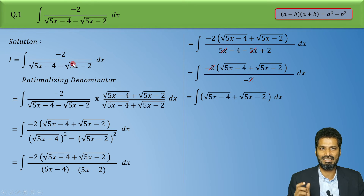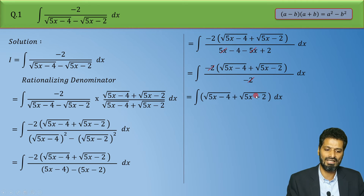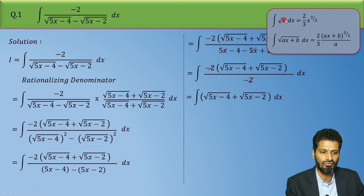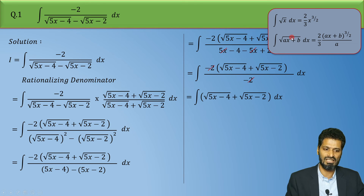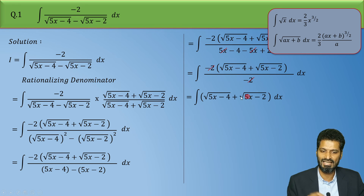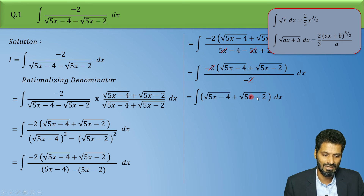So we have converted a somewhat complicated integral into a much simplified form. Now we simply need to integrate this. To integrate this, let us recall the formula: integration of root x is (2/3) x raised to 3/2, and its composite form is: integral of root of (ax plus b) dx equals (2/3) times (ax plus b) raised to 3/2, divided by a, where a is the coefficient of x. Both functions in our integral exactly match this form, so we apply this formula to each.